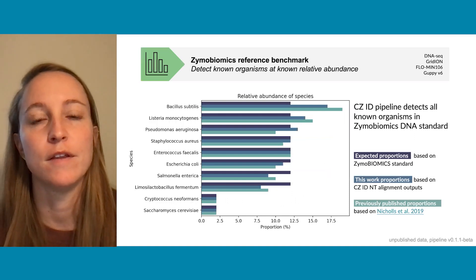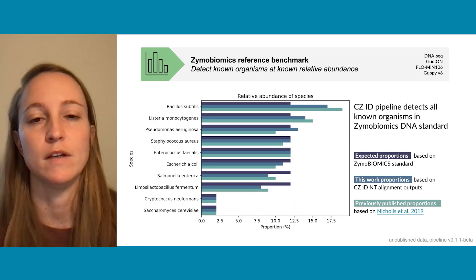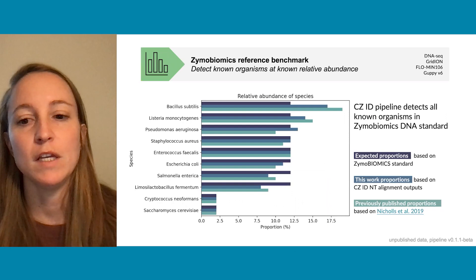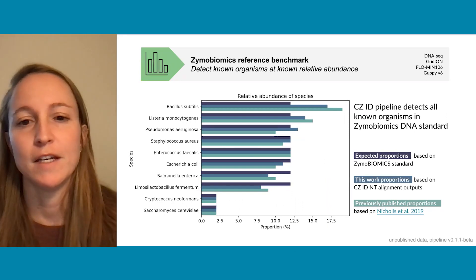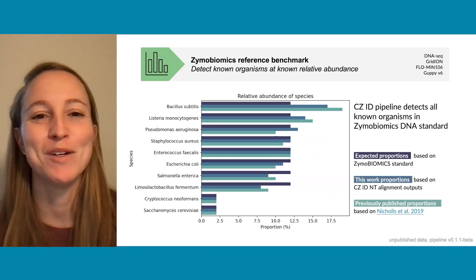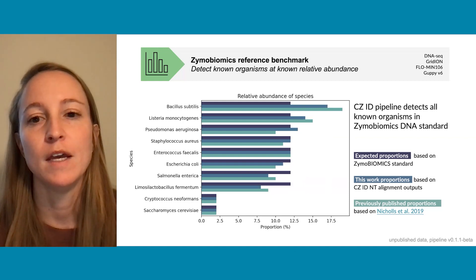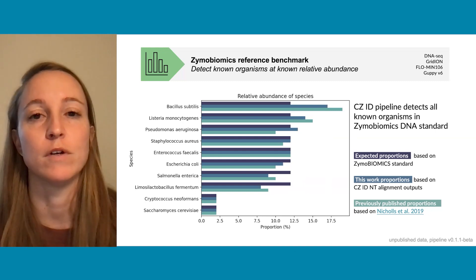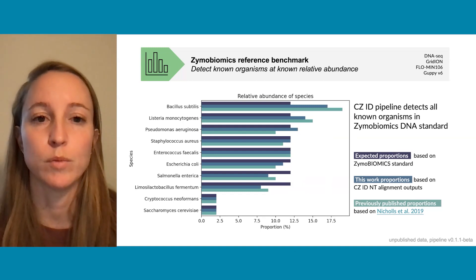Looking at the known relative abundances, shown here are the 12 organisms known to be in the Zymo Biome reference benchmark. In dark blue are the expected proportions, in medium blue the proportions identified by the CZID pipeline, and in light greenish-blue the previously characterized proportions from the publication. The CZID pipeline is successfully able to detect all of these known organisms, and the relative abundances are comparable to the expected and previously published proportions.